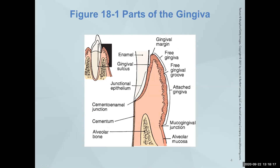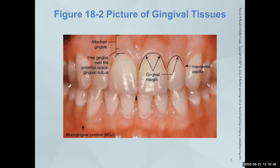Who remembers what it's called if you don't have attached gingiva because of recession or something? A mucogingival defect — good job. This is a standard picture for everything considered healthy. You can see your gingival margin, the gingival crevice underneath it, your interdental papilla, and the gingival groove right here — just a little bit of rolling. This is different from an inflammation state called festooning.